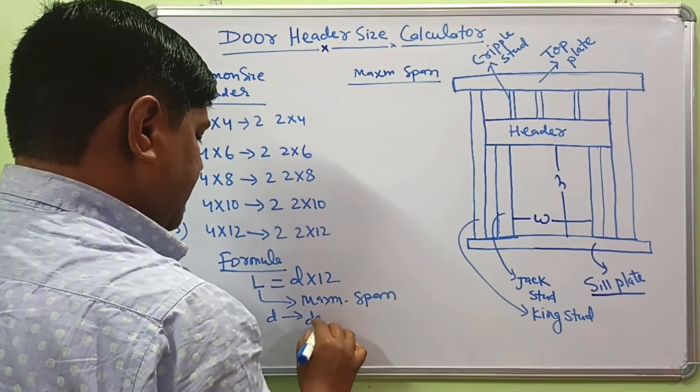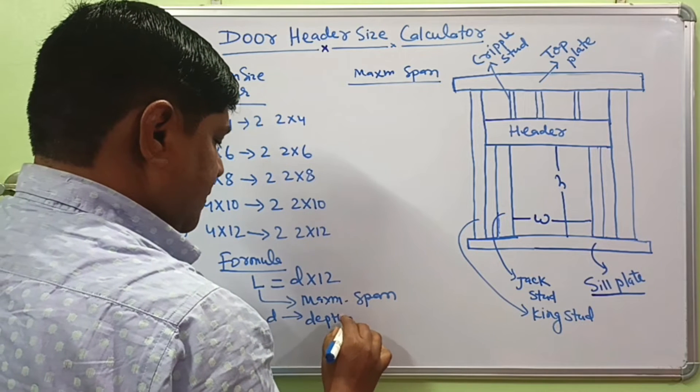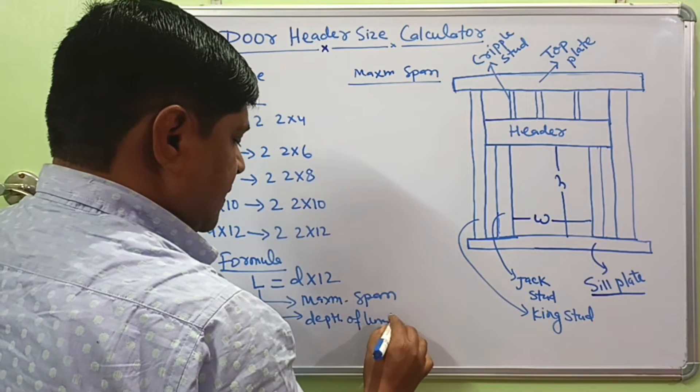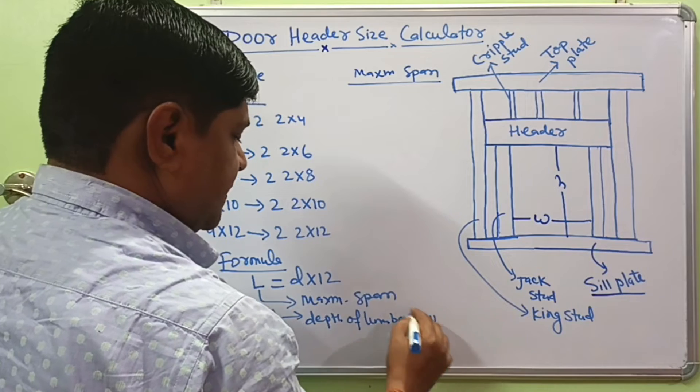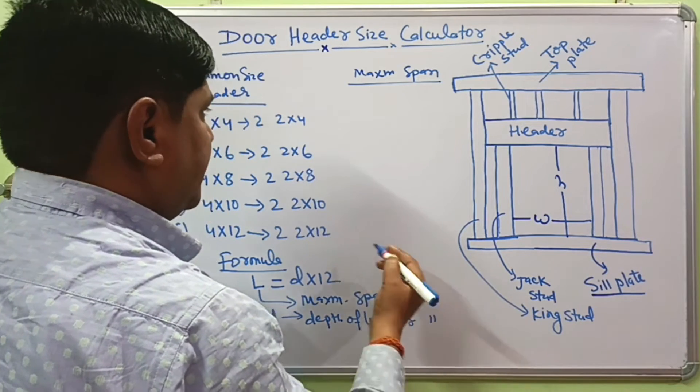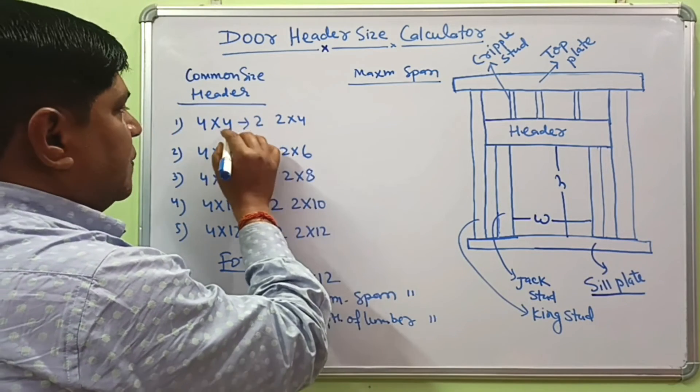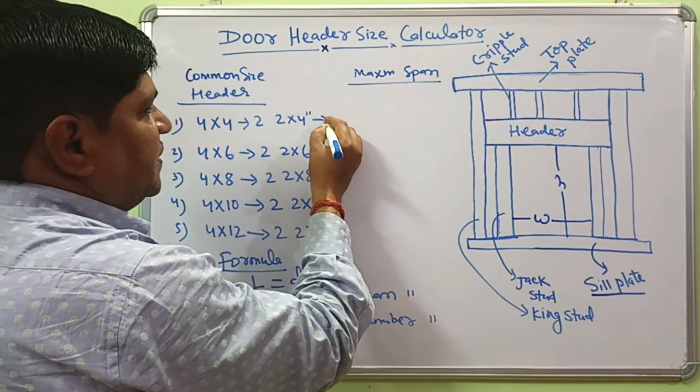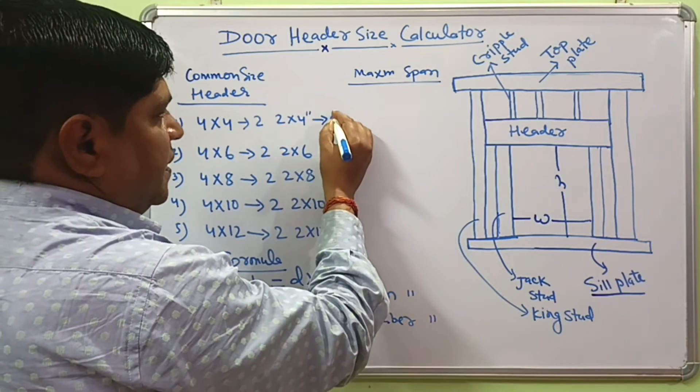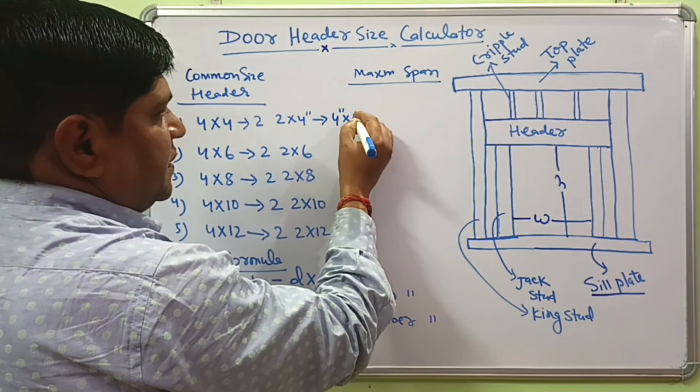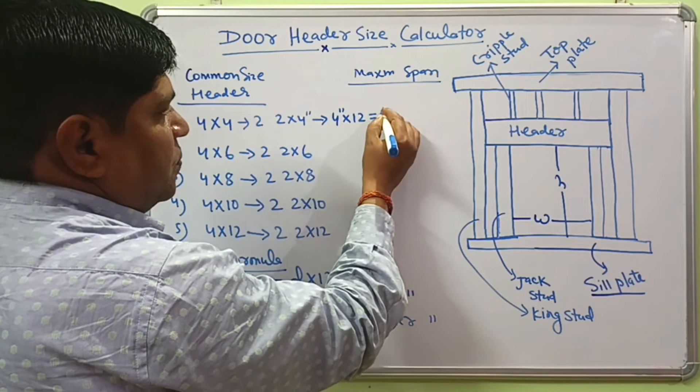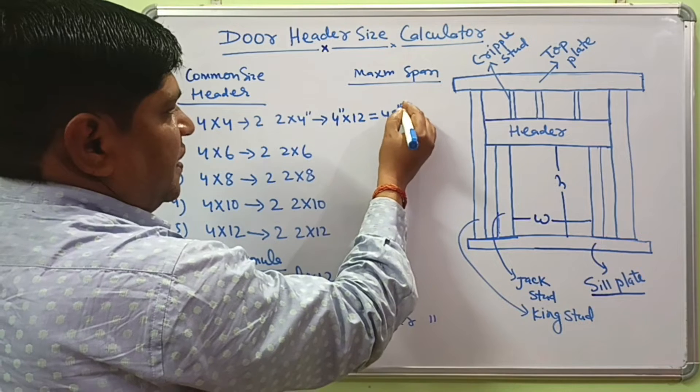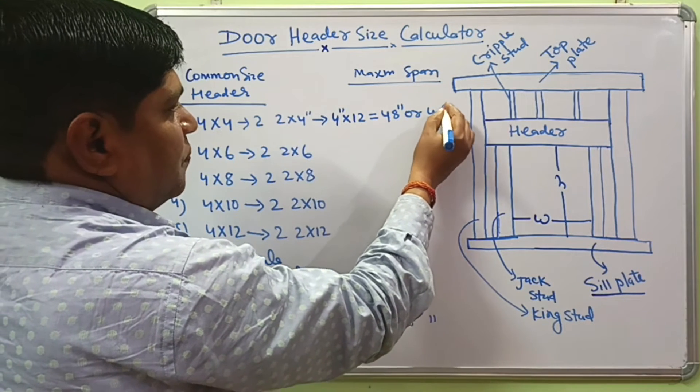D is depth of lumber in inches. If your depth here is 4 inches, it means you can multiply depth 4 inches by 12. This will come about 48 inches or 4 feet.